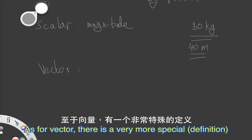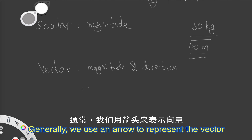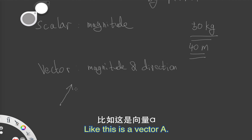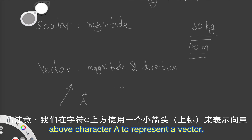As for a vector, it is more special. A vector has both magnitude and a direction. Generally, we use an arrow to represent the vector — like this is a vector, maybe vector a. Notice that we use a little arrow as a superscript above the character a to represent a vector.